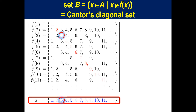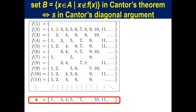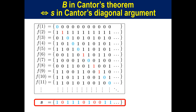Thus, there is always subset B of P(A) which is not present in the list. You can note the similarity between this Cantor diagonal set B in the Cantor theorem and S in the Cantor Diagonal Argument, which can be seen more clearly by changing the presence or absence of each element in the set as 1 or 0. Then f_i becomes a list of binary digits, and B becomes a sequence of binary digits with the i-th digit complementary to the i-th digit of f_i.